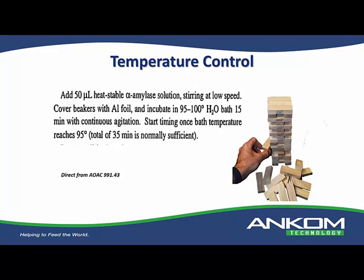From a temperature control standpoint, this can be largely sample dependent, but it's also an important factor for the enzyme's best operating temperature. There's also a pH factor for the different enzymes. In method 991.43, the amylase digestion — the first digestion — calls for 95 to 100 degrees for at least 15 minutes. I had a laboratory in another country which mistranslated that to say it had to be 95 to 100 degrees for 35 minutes. That's not what the method says, and so they got an impact on their results.